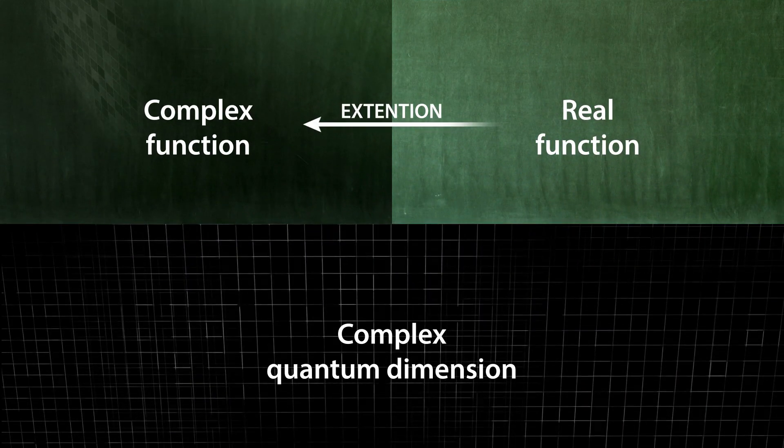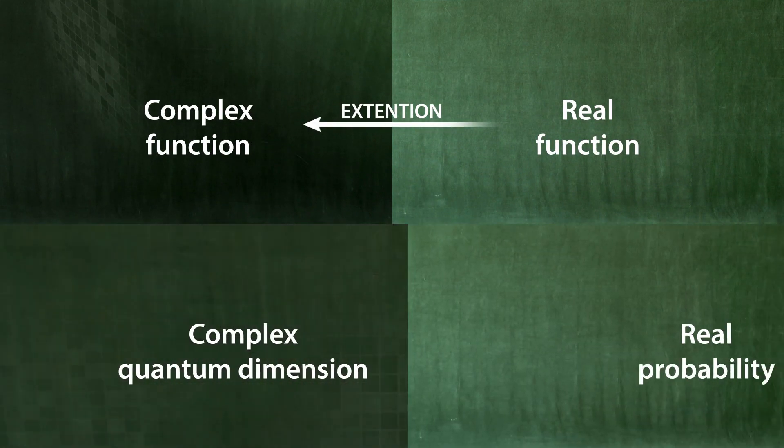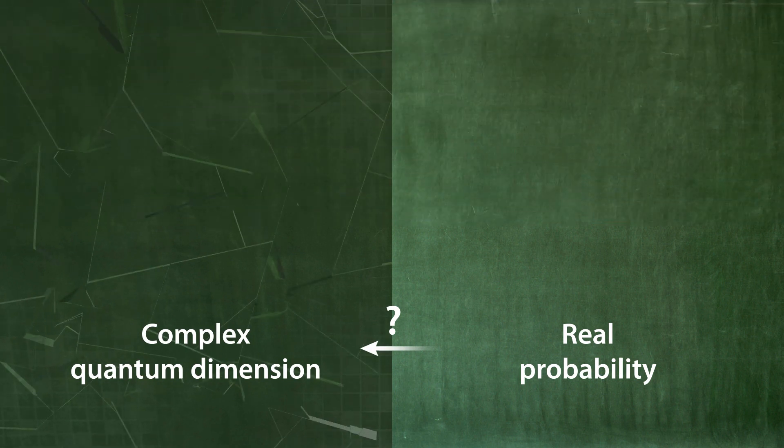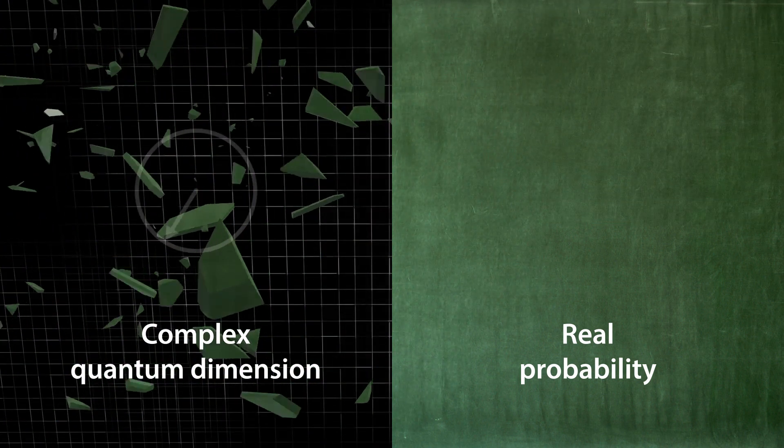What about the quantum dimension? What is the situation there? Is everything specified by the real probabilities here as well? No, not at all.